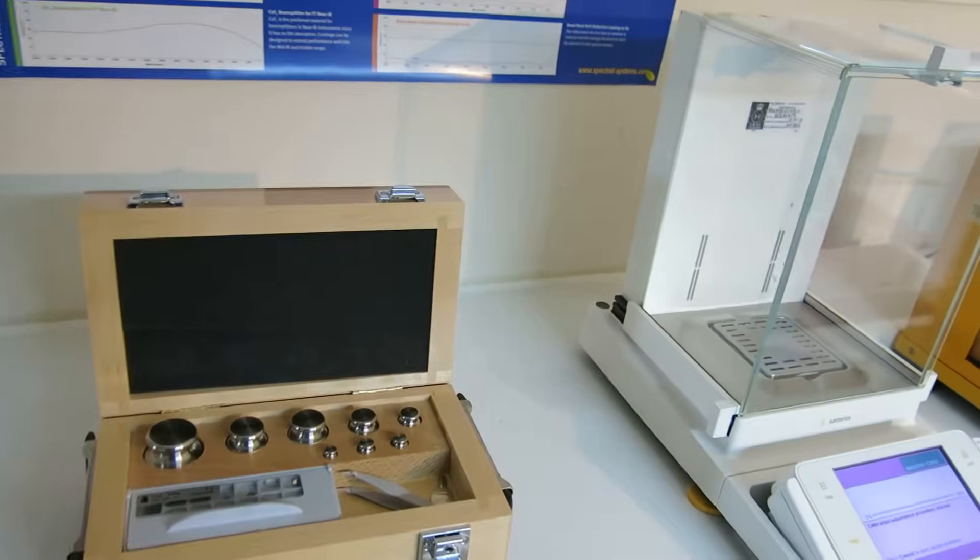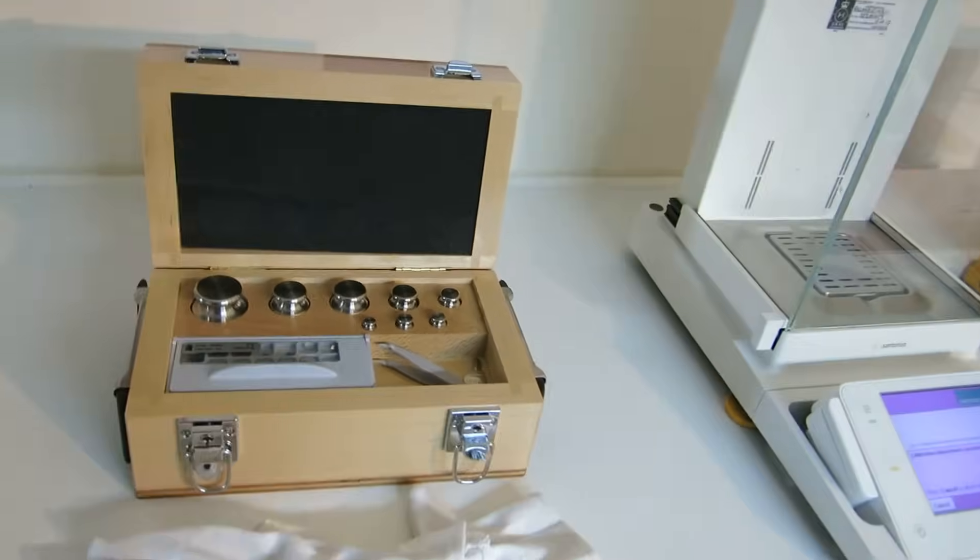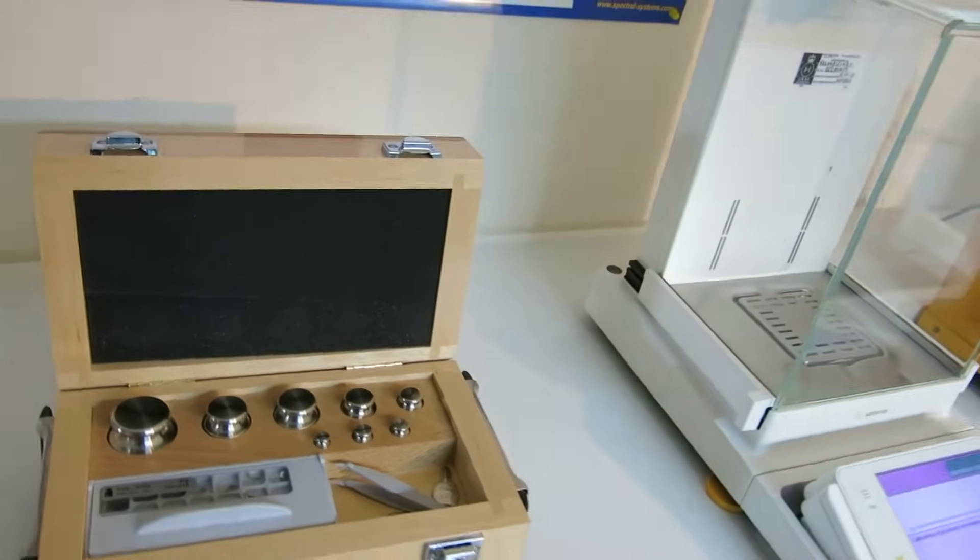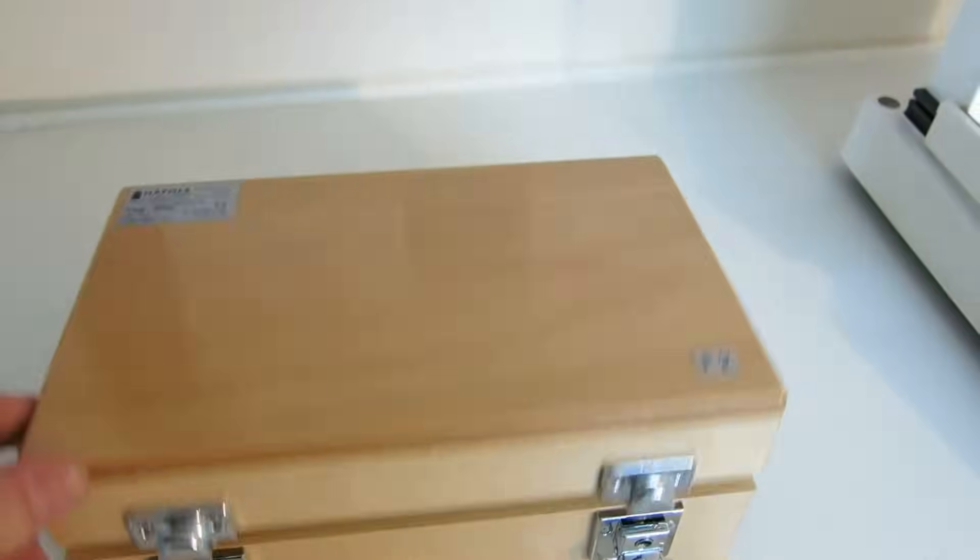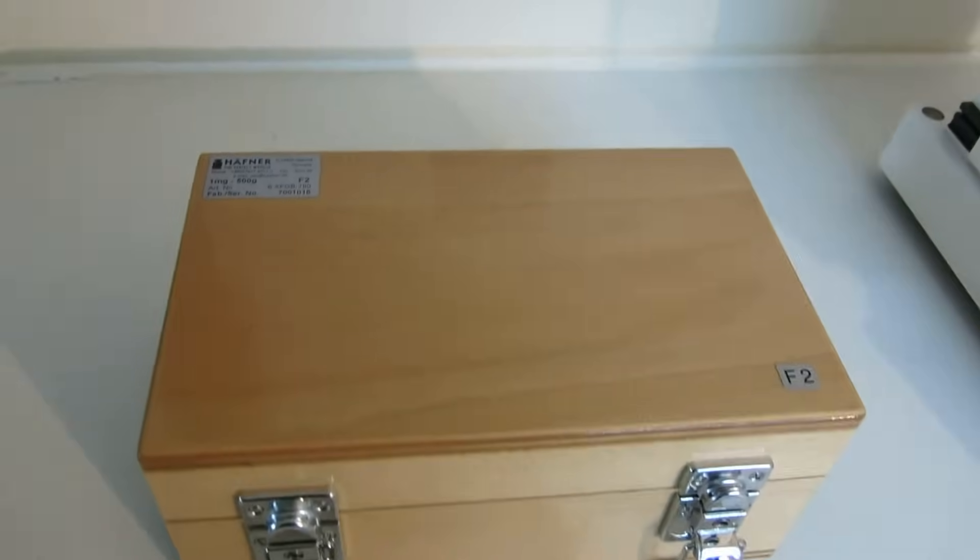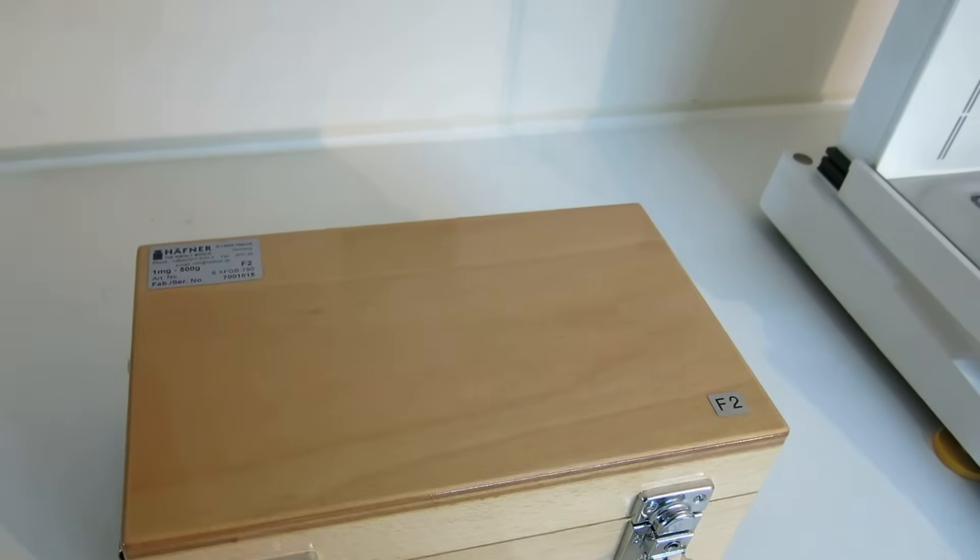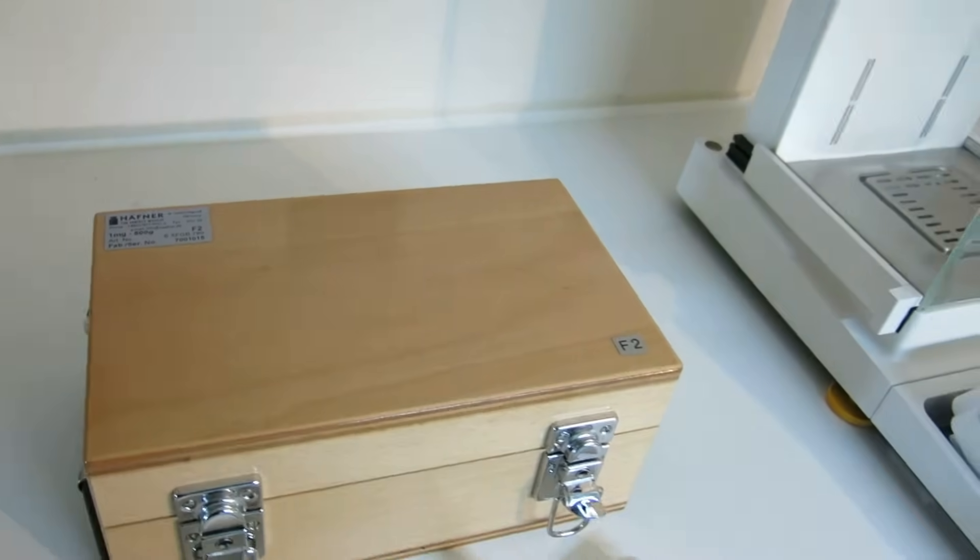We've got the 1mg to 500g. This is the F2 grade. Extremely well made. Hafner. Made in Germany. Lovely beech box here with gloves as well. Talk to us about these. 1mg to 500g Hafner weights.